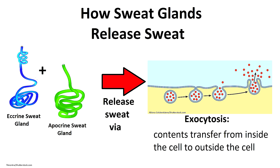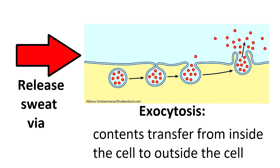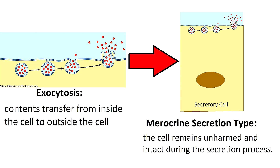All those sweat glands release their contents through exocytosis, where the contents transfer from inside the cell to outside the cell. They use a secretion type known as merocrine secretion, which means the cell remains unharmed and intact during that secretion process.